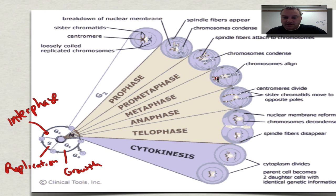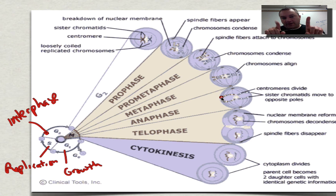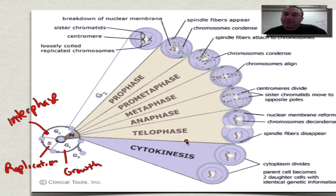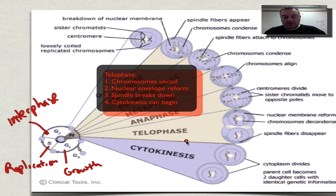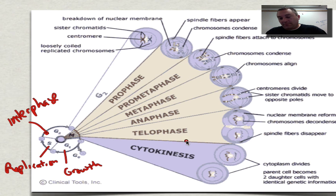During metaphase, the chromosomes line up in the middle and the kinetochores are connected to the spindles, and you're ready to go through anaphase. During anaphase, the chromatids separate because the kinetochores are chewing their way down the spindle. Then during telophase, it's essentially the opposite of prophase — you're going to reform the nuclei for each of the daughter cells. The nuclear envelope is going to reform, the chromosomes are going to uncoil, and the spindles are going to break down. Then you're going to possibly begin the process of cytokinesis.